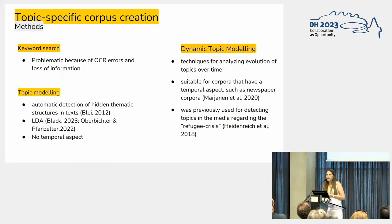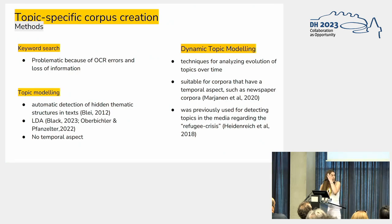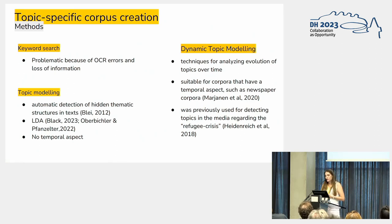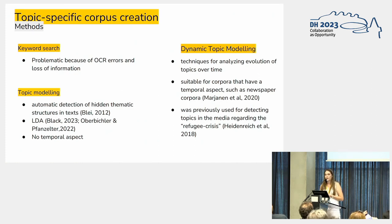Looking at different methods previously used for the creation of topic-specific corpora: keyword search was found to be problematic because of OCR errors which led to loss of information. Topic modeling was also used — specifically the automatic detection of hidden themes in text through LDA — however this was done through static topic modeling without the temporal aspect. I wanted to try dynamic topic modeling, which analyzes the evolution of topics over time and is specifically suitable for corpora with a temporal dimension such as newspapers.